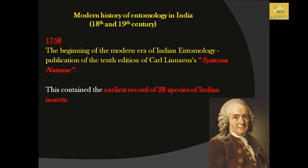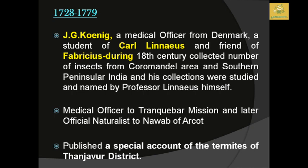The modern history of entomology in India was mainly developed during the 18th and 19th centuries. In 1758, the 10th edition of Carolus Linnaeus's Systema Naturae is considered the base for the modern era of Indian entomology, containing around 28 species of Indian insects. From 1728 to 1779, J.G. Koenig, a medical officer from Denmark, a student of Carlos Linnaeus, and a friend of Fabricius, collected a number of insects from the Coromandel area and southern peninsular India; his collections were studied and named by Professor Linnaeus himself.